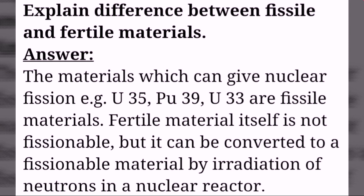Explain the difference between fissile and fertile materials. The materials which can undergo nuclear fission, such as U-235, Pu-239, and U-233, are fissile materials. Fertile material itself is not fissionable, but it can be converted to a fissionable material by irradiation of neutrons in a nuclear reactor.